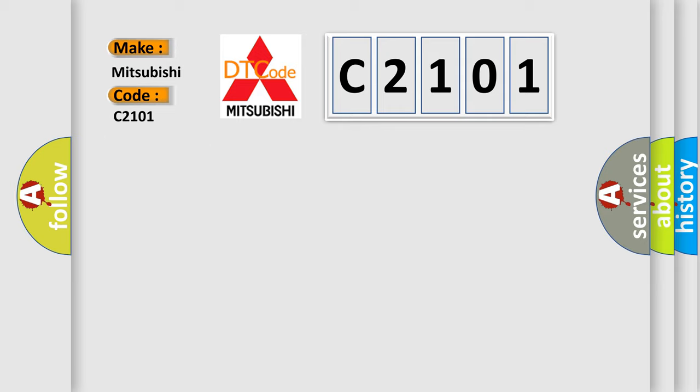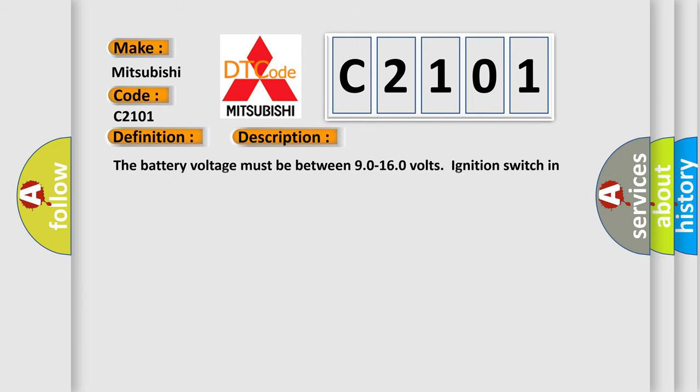The basic definition is Trans-preference switch circuit low. And now this is a short description of this DTC code. The battery voltage must be between 90 to 160 volts, ignition switch in the run position. The tow-haul switch must be activated.